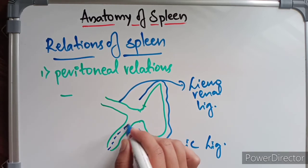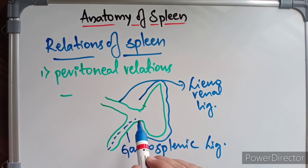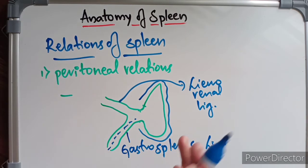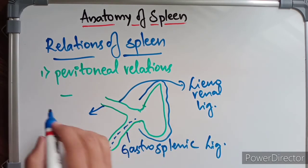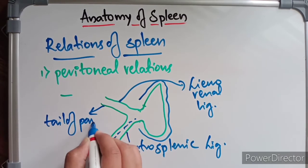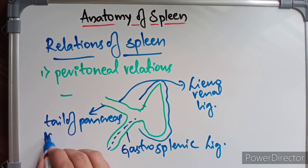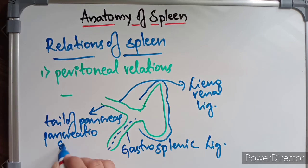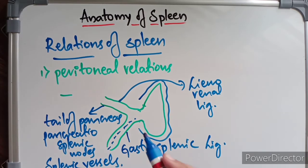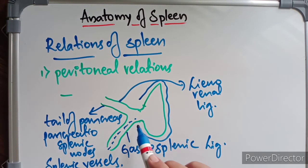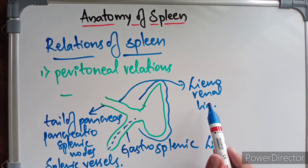The gastrosplenic ligament contains short gastric vessels. The lienorenal ligament extends from the hilum of the spleen to the anterior surface of the left kidney, and it contains three things: the tail of the pancreas, the splenic vessels (splenic artery and vein), and pancreatic splenic lymph nodes.